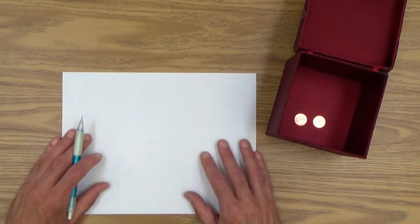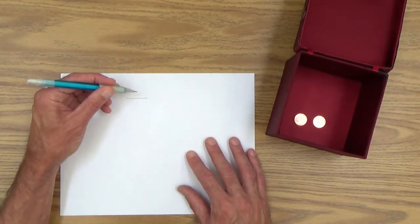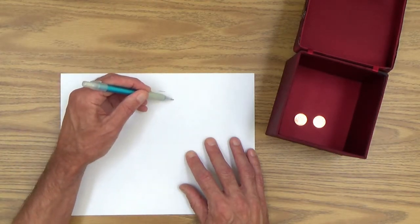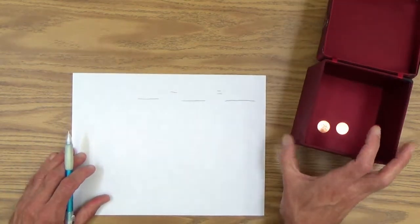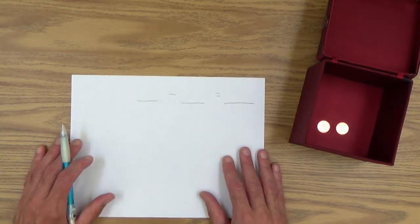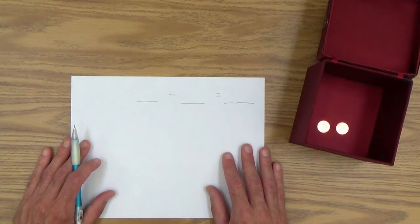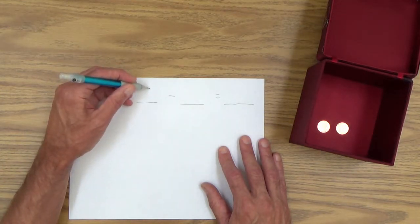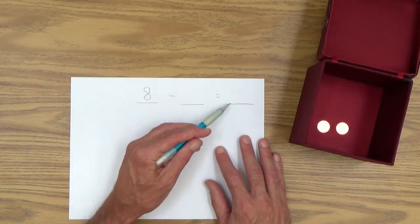Just like we did previously, let's set up a number sentence for this. So it's something, and I can tell you ahead of time, it's a subtraction. Something minus something equals something. So what do we know? We know that there were, we started with eight pennies in the mystery box. And we call that the minuend, that's the largest number. And we know that in a subtraction problem that goes right here. And we're going to take away something from it. And then we're going to get the difference here.